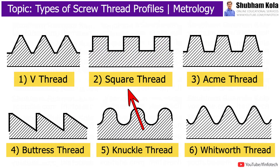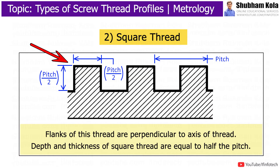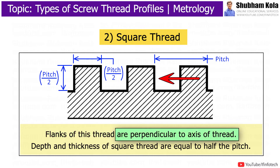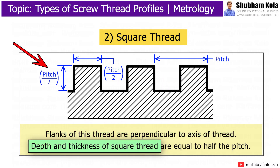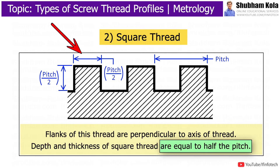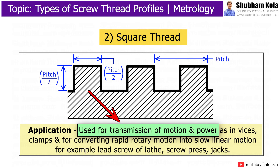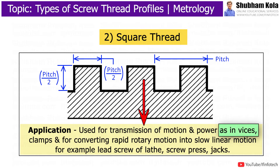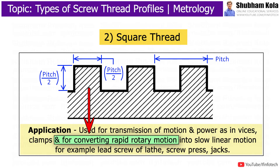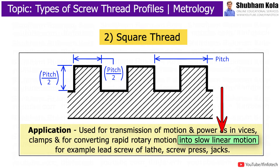Next is Square Thread. These types of screw threads are in the form of a square. The flanks of these threads are perpendicular to the axis of the thread. The depth and thickness of square thread are equal to half the pitch. The square thread is quite square in cross-section and is used for transmission of motion and power, as in a vice, clamps, and for converting rapid rotary motion into slow linear motion.